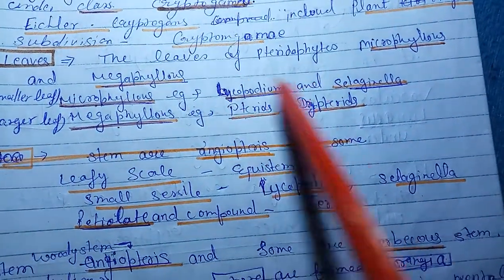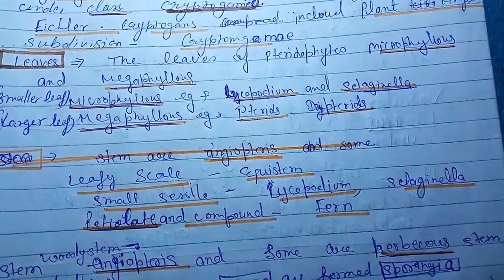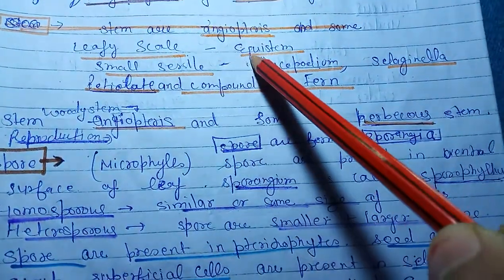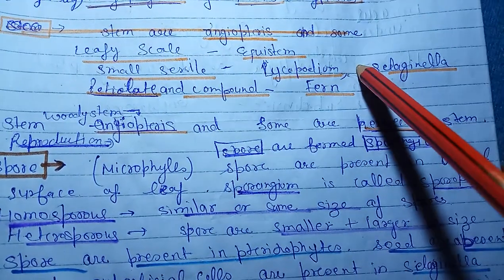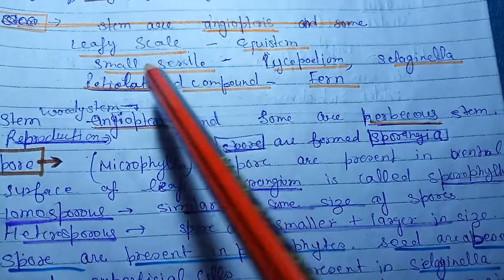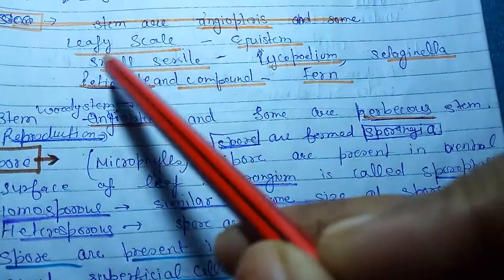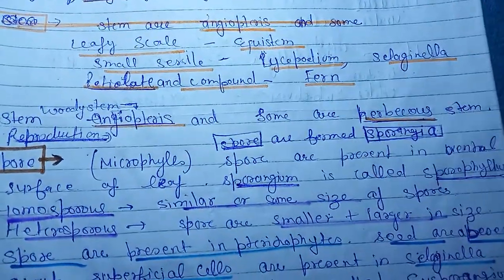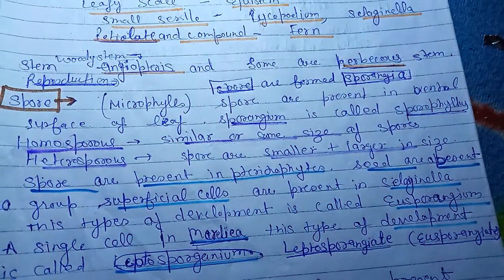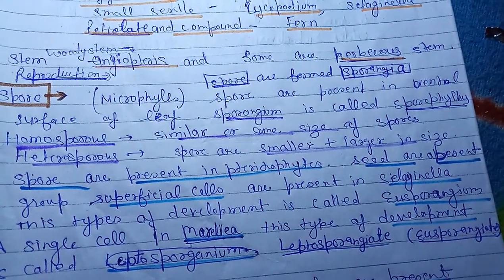Example of large leaf is Pteris and Dryopteris. Smaller leaf of pteridophytes examples like Lycopodium and Selaginella. Leafy scales are present in aquatic plants. Small sessile leaves in Selaginella and Lycopodium. Petioles and compound leaves can be seen in fern members.